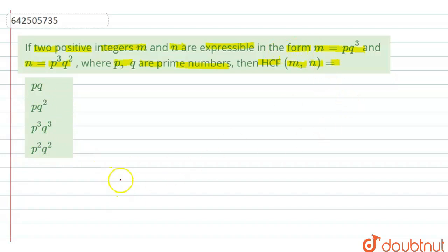So here, first of all we are seeing that they are given us M is equal to PQ raised to 3 and N is equal to P raised to 3 Q raised to 2.